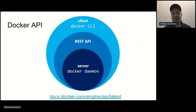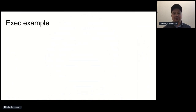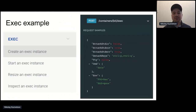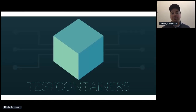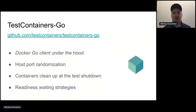The better way is to use the REST API of the Docker daemon. The Docker daemon runs on your machine and provides an API you can use to start containers. The Test Containers library leverages that Docker API. Under the hood, it uses the official Docker Go client. And for developers, it provides useful features like host port randomization, container cleanup, and readiness waiting strategies.